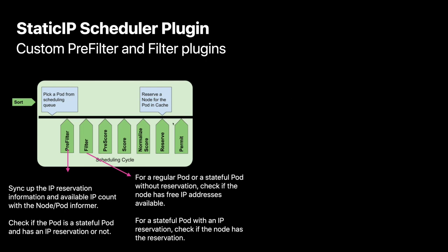If we look at how we implement this using the scheduler framework, the simplest design implementation here is to introduce two plugins or extension points. One is for the pre-filter. During the pre-filter, we have to sync up and make sure the scheduler has the right and correct information about the IP state as well as the IP reservation information. The second is to check and classify a pod into three different categories: a new stateful pod without allocated IP, an existing stateful pod with IP, and a regular pod.